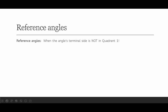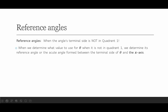We use a reference angle when an angle's terminal side is not in quadrant 1. When we determine what value to use for theta when it's not in quadrant 1, we determine its reference angle — the acute angle formed between the terminal side of theta and the x-axis. It's so important that it's the x-axis. So if we have an angle that goes up like this, here's my angle theta, and the reference angle is the angle formed between the x-axis and that terminal side — so right here is the reference angle.